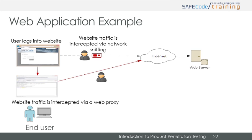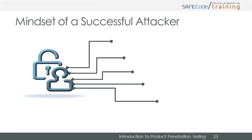A working exploit for this weakness vulnerability would involve analysis of a typical login request with a web proxy. Tools could include Zed Attack Proxy (ZAP), Fiddler, and Burp Suite, or network traffic analysis tools such as Wireshark and TCP Dump.